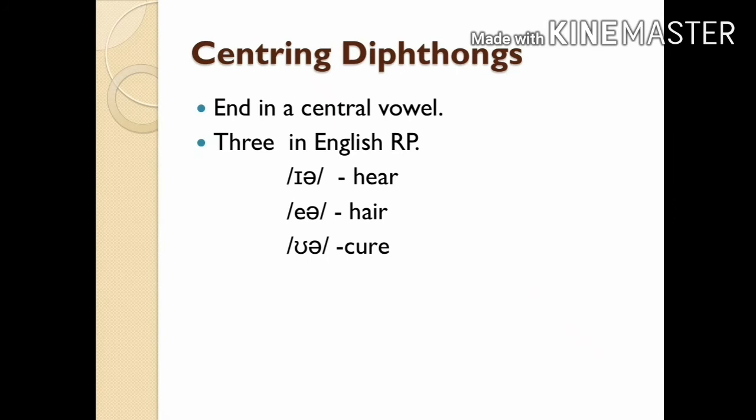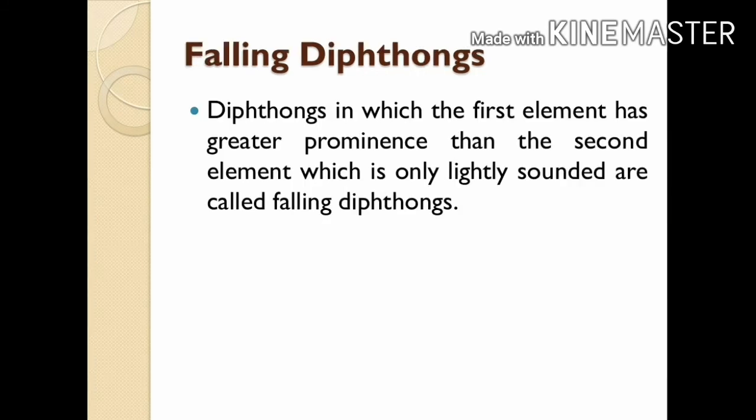There are three centering diphthongs in English RP. These diphthongs end in a central vowel. The centering diphthongs in English RP are: /ɪə/ as in 'here,' /eə/ as in 'hair,' and /ʊə/ as in 'cure.'